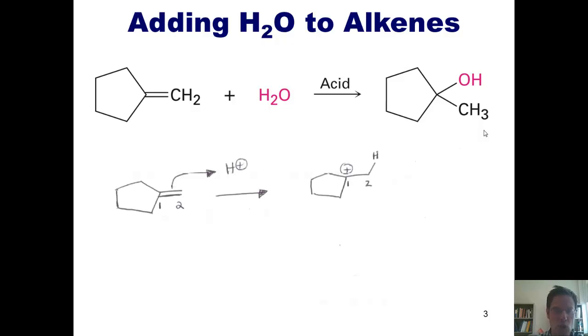It's going to bond to carbon 2, which will give us this product. The reason that it bonds to carbon 2 and not carbon 1 is because by bonding to carbon 2, it leaves us with a tertiary carbocation. If it bonded with carbon 1, it would give us a primary carbocation. This is dictated by Markovnikov's rule.